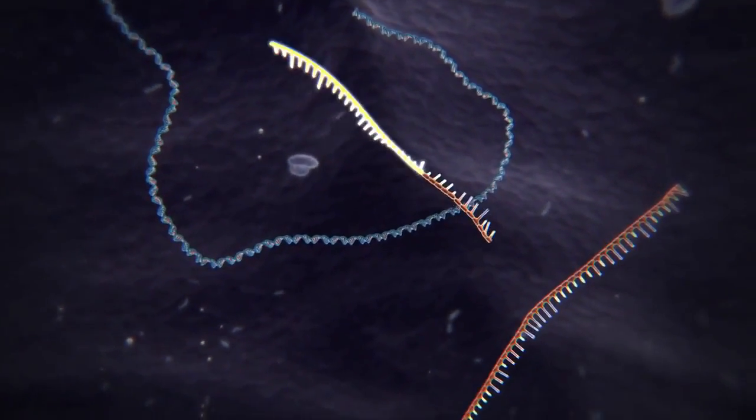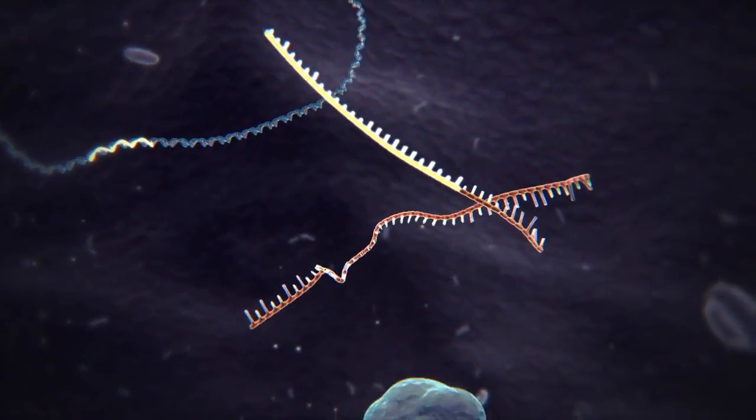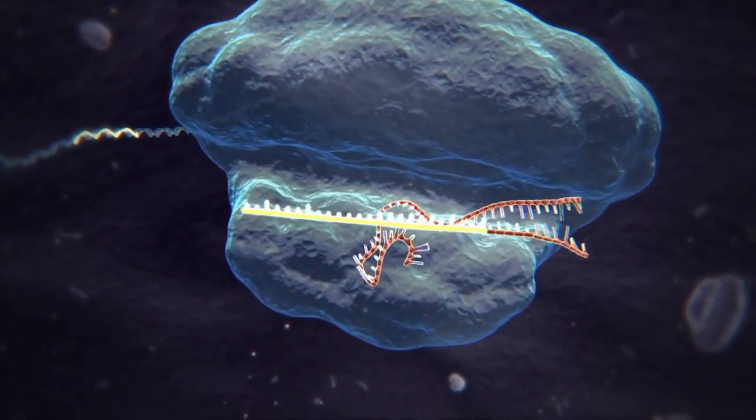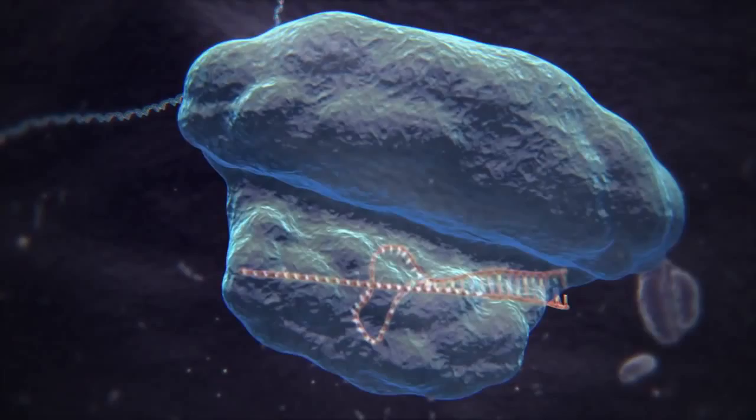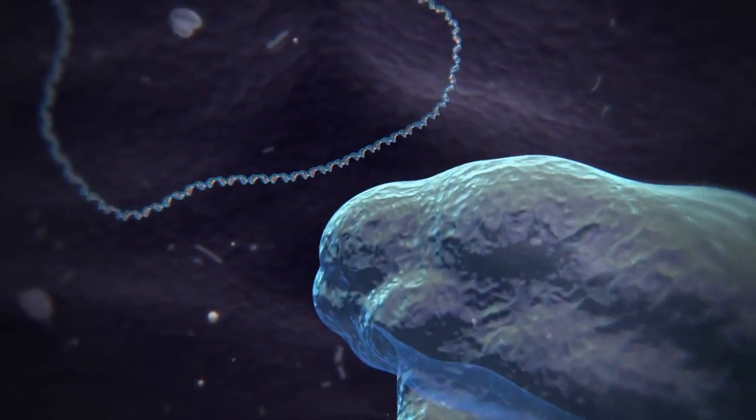One of which contains a sequence that matches that of the invading virus. These two RNAs form a complex with a protein called Cas9. Cas9 is a nuclease, a type of enzyme that can cut DNA.